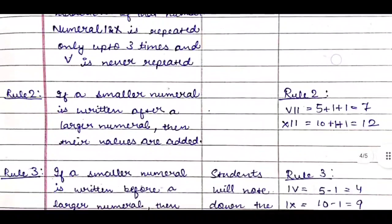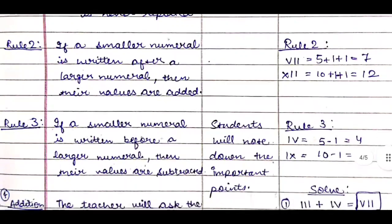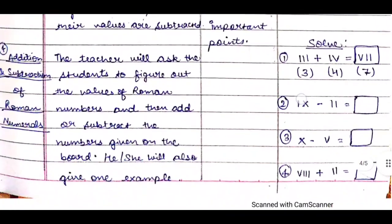Second rule: If a smaller numeral is written after a larger numeral, then their values are added. So V and then I and I are written, it means they have to be added. Then we will explain them the third rule: If a smaller numeral is written before a larger numeral, the opposite, then their values are subtracted. Students will note down the important points and we will give them the examples on the board and explain them.